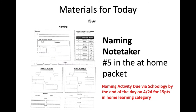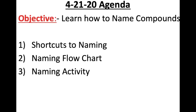For today, the materials you need to take out: you have this number five naming note taker in your at-home packet. We're going to work through the front side of this today, and the back side is an activity you're going to work through on Schoology that you need to complete by the end of the week — it's going to be 15 points in your home learning category. Our objective today is we're going to learn how to name compounds. We're starting to look at how bonds are formed, and a bond forms a compound — more than one atom put together. We're going to go through some shortcuts and a flow chart.